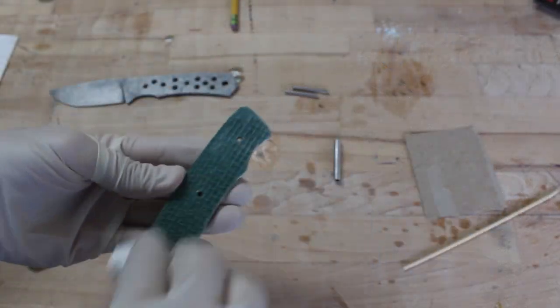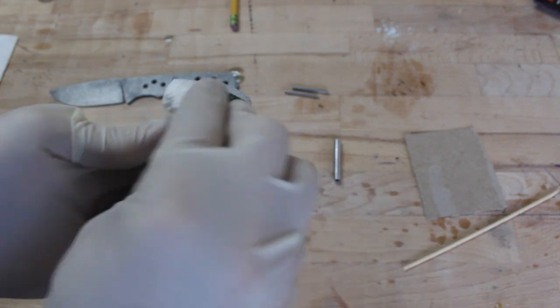Now I will clean all the parts off and then I will be gluing the scales to the knife using a two part Gorilla Glue epoxy.